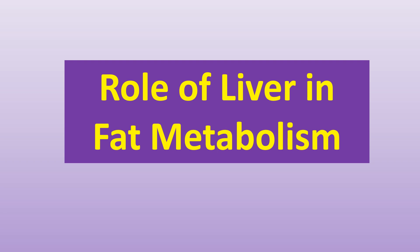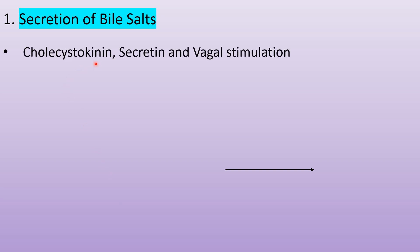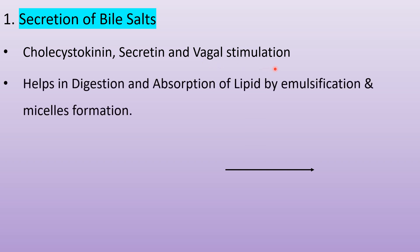Role of liver in fat metabolism. The first function of the liver is the secretion of bile salt. Cholecystokinin and secretin hormones are secreted in the duodenum after the chyme reaches. Vagal stimulation also secretes bile salt from the liver, which helps in the digestion and absorption of lipids by emulsification and micelle formation.